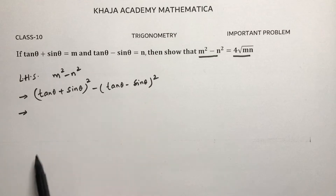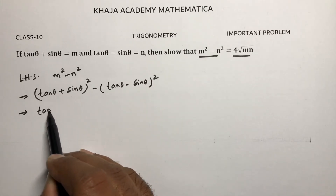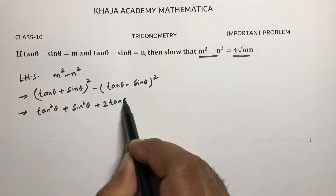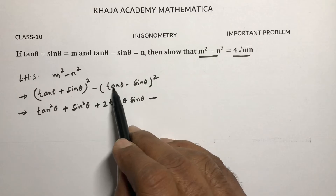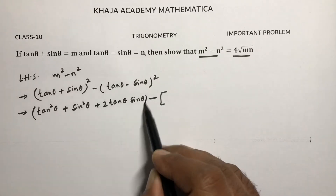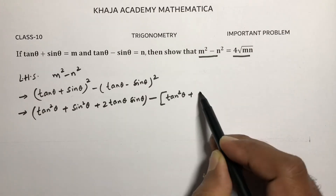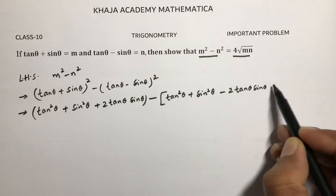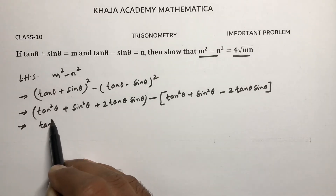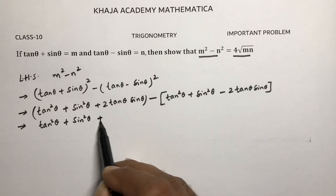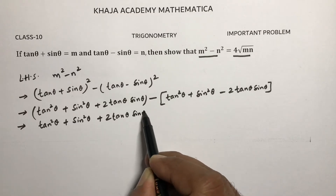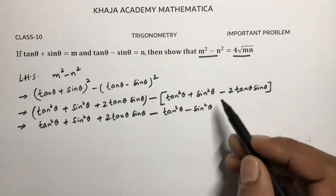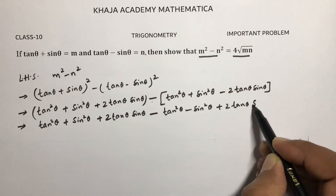Here it is in the form of (a + b) whole square, so a squared plus b squared plus 2ab gives tan squared θ plus sin squared θ plus 2 tan θ sin θ. Then it is in the form of (a - b) whole square, so a squared plus b squared minus 2ab gives tan squared θ plus sin squared θ minus 2 tan θ sin θ.